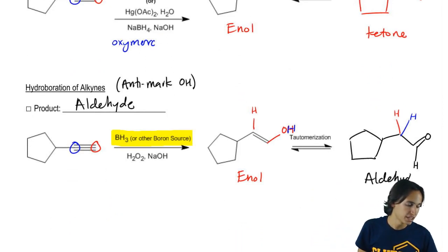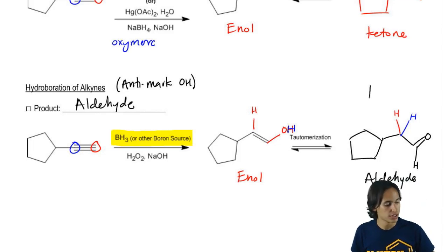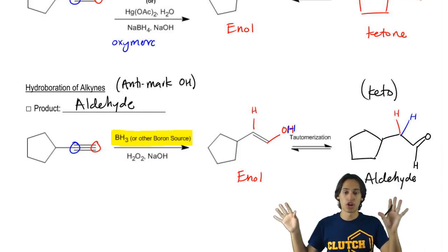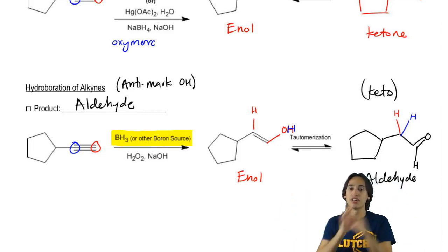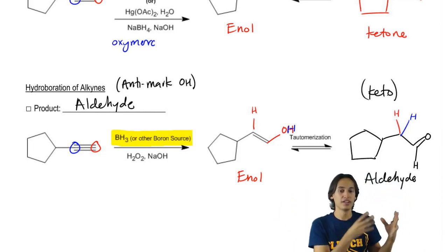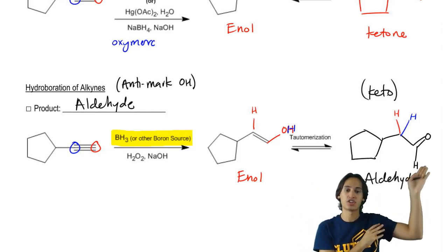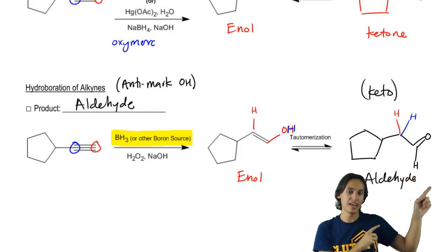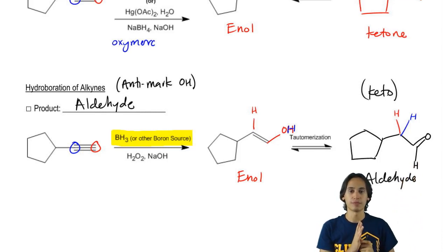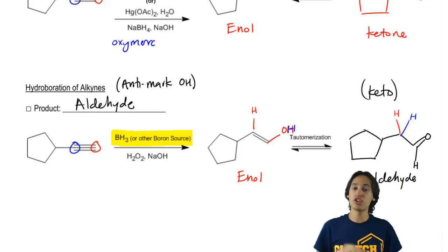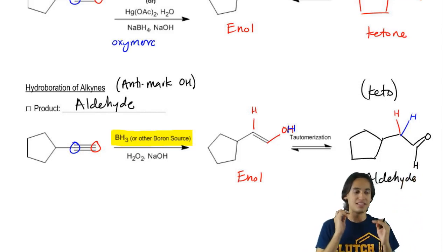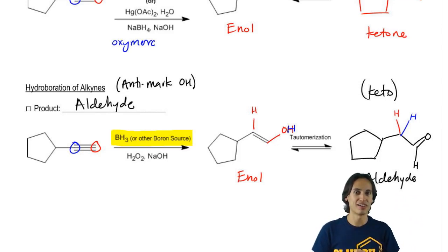In general, this is still called the keto form. In terms of tautomers, this is the enol tautomer and this is the keto tautomer. But this specific molecule is an aldehyde because the carbonyl is right at the edge and has one H on it. That's something that could definitely come up on an exam, so you need to know what's going on.